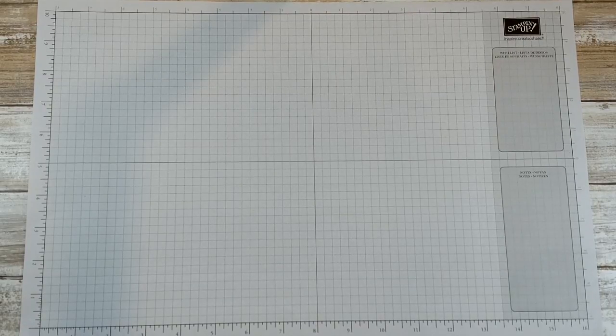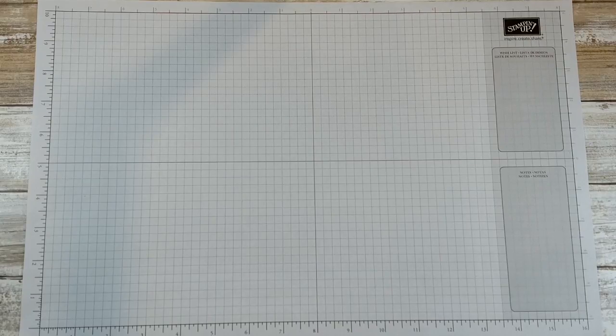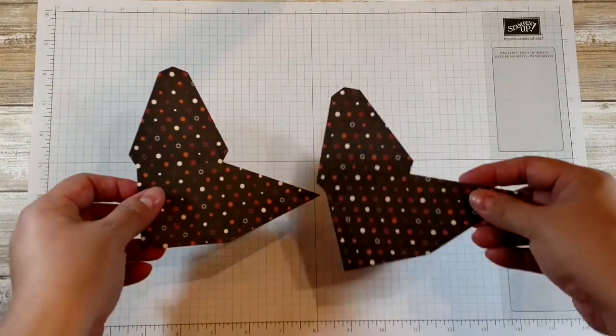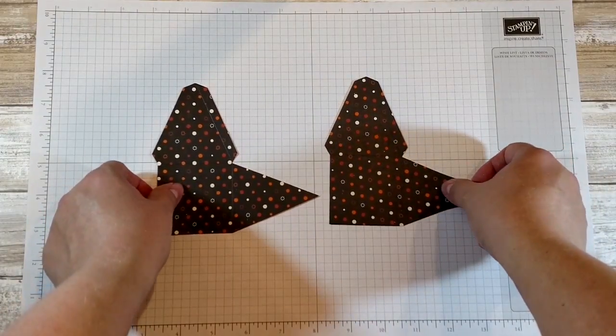You're going to take a piece of 5 1⁄4 by 7 1⁄2 inch Halloween Designer Series Paper and you're going to die cut or use the template and make two box pieces.